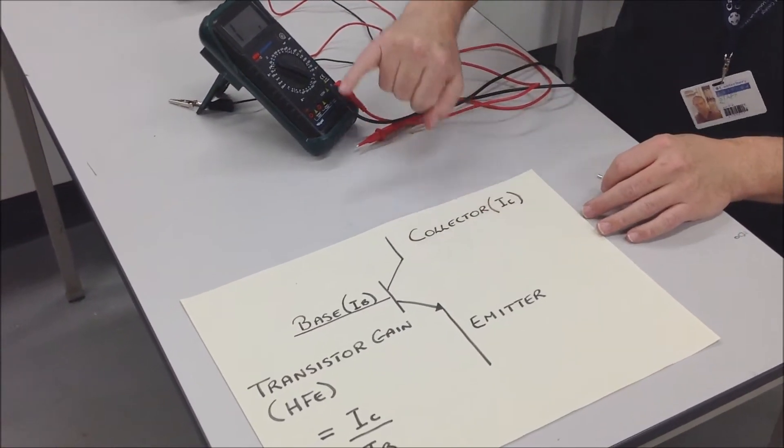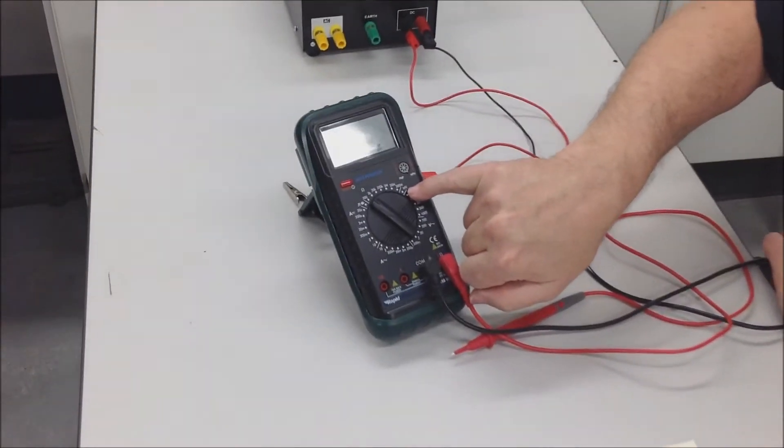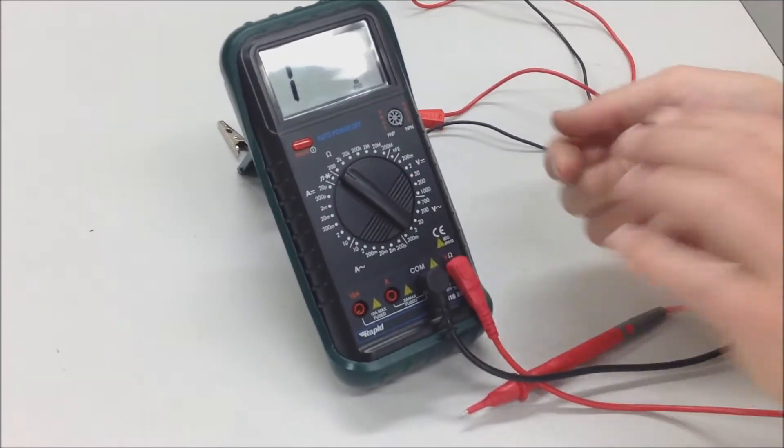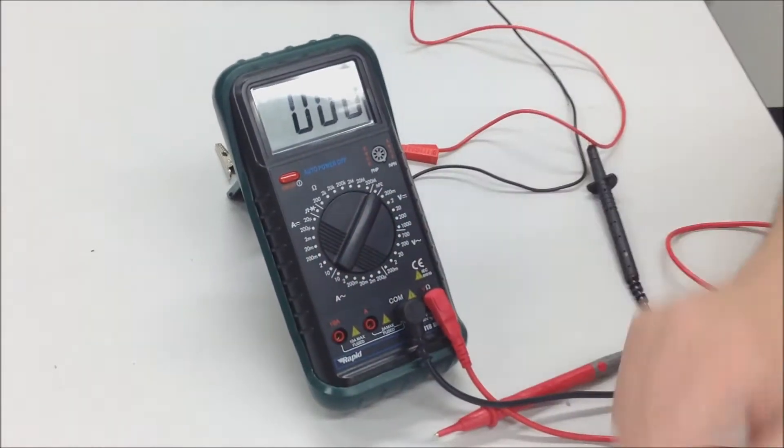So, multimeters also can be used, this model can be used to check the gain of a transistor using the HFE setting here, which I want to set to there. And that tells us how much gain.